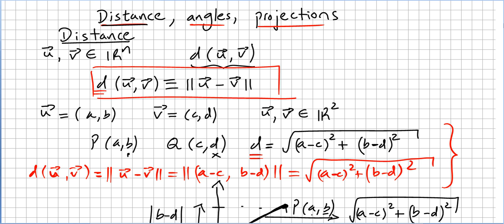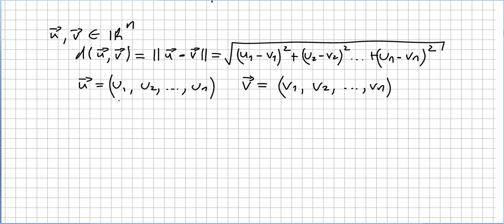This video is in a chapter on vectors and vector spaces, and we are introducing concepts of distance, angles, and projections. We introduced in the previous video the concept of distance: the distance of vectors u and v is defined as the absolute value of u minus v. If this is vector u and this is vector v, the distance between u and v will be this absolute value here. We also introduced the concept of distance in any n-dimensional vector space.